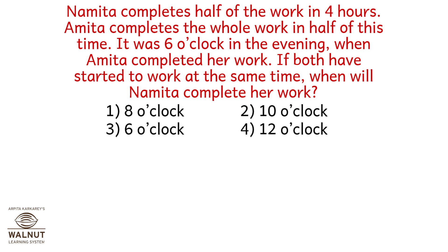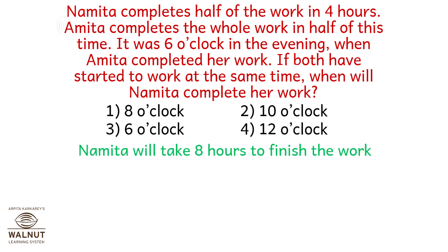Namita completes half of the work in 4 hours. Amita completes the whole work in half of this time. It was 6 o'clock in the evening when Amita completed her work. If both started to work at the same time, when will Namita complete her work? Namita completes half of the work in 4 hours, so Namita will take 8 hours to finish the work.